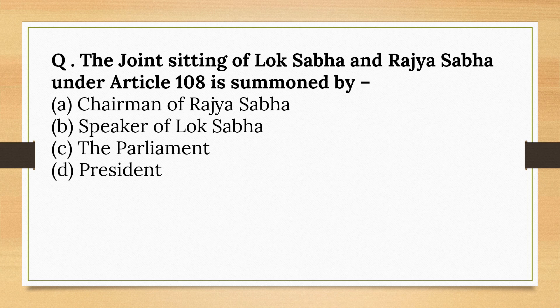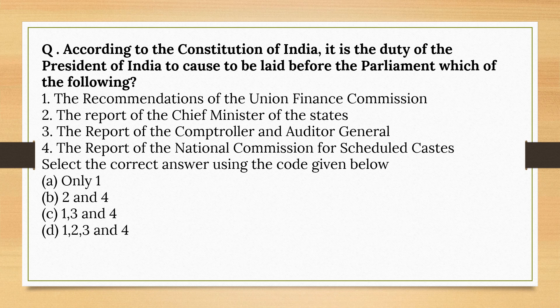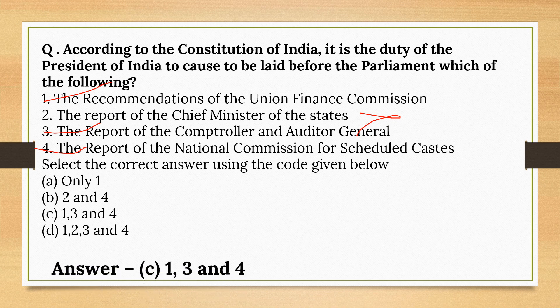The joint sitting of Lok Sabha and Rajya Sabha under Article 108 is summoned by the President of India. According to the Constitution, the President is duty-bound to place before Parliament: the recommendation of the Union Finance Commission — correct; the report of the Controller and Auditor General — correct; the report of the National Commission for Scheduled Castes — correct. But the report of the Chief Ministers of States is not correct. So the correct option is Option C.